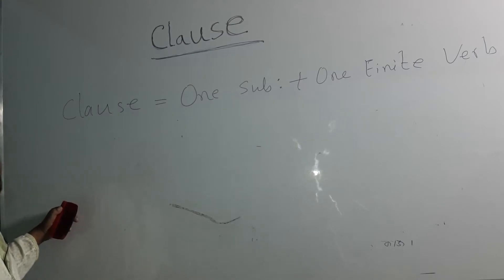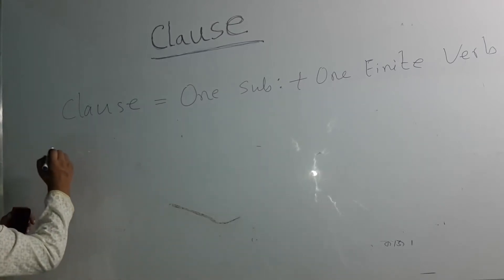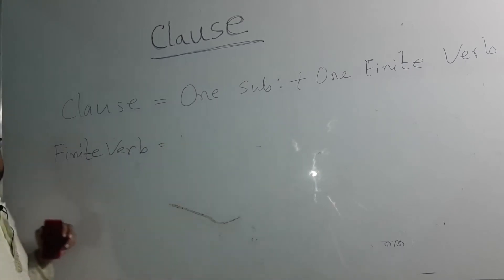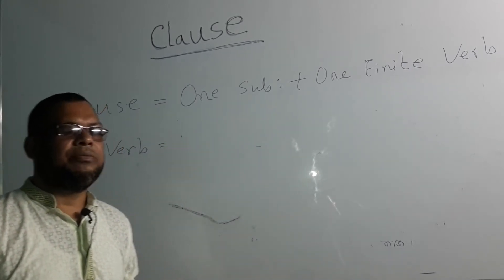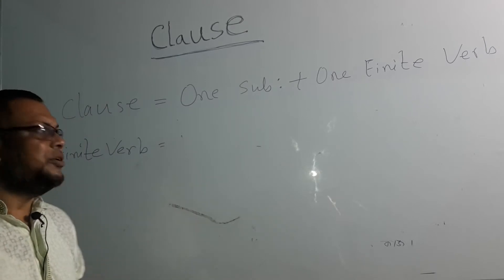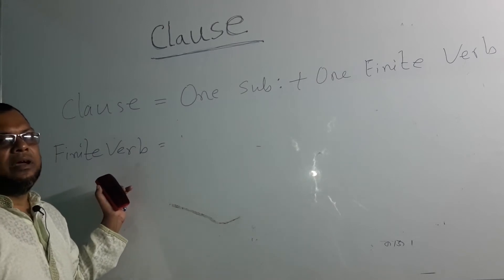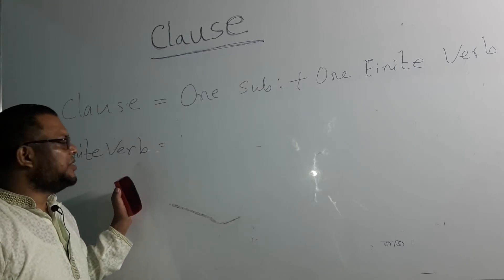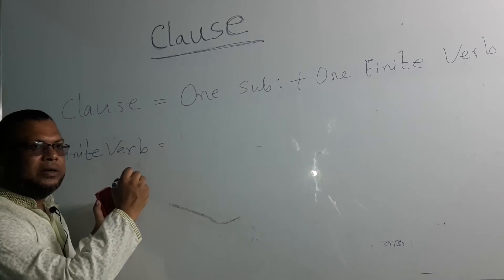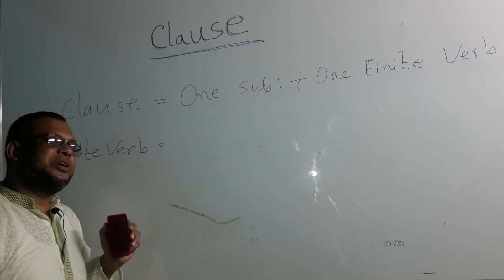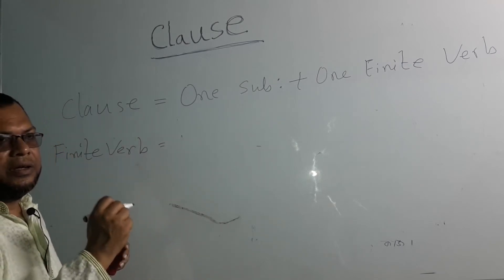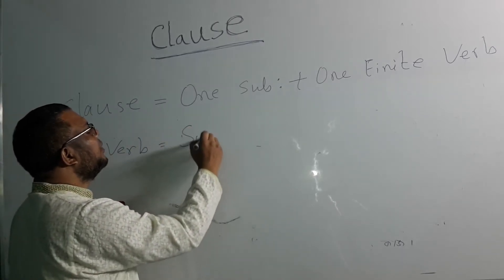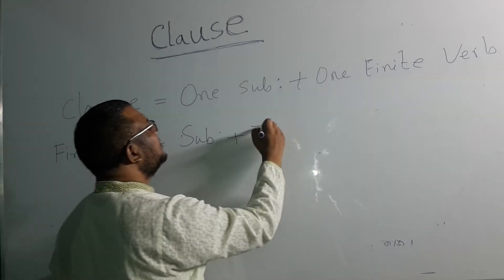You may have a question: what is a finite verb? A finite verb is a kind of verb which agrees according to its subject and tense. That means according to its subject's number, person, and tense. So, I can write: subject plus tense.